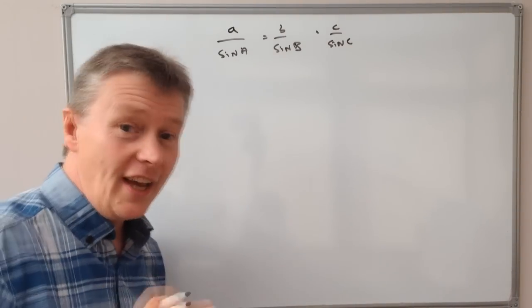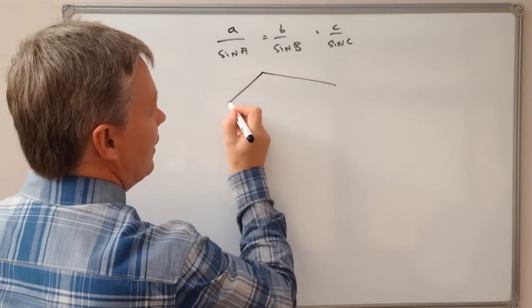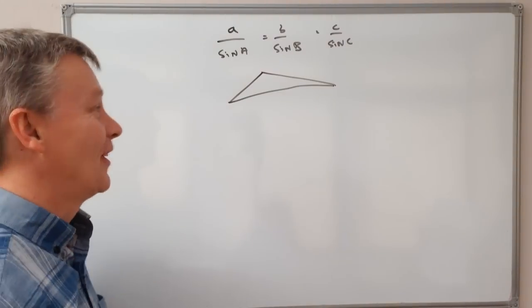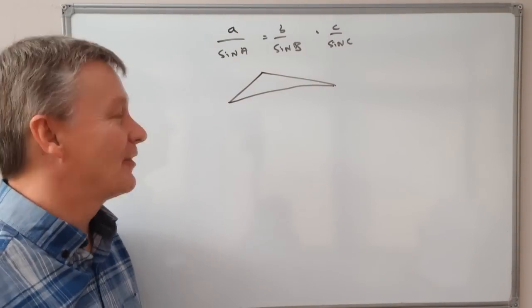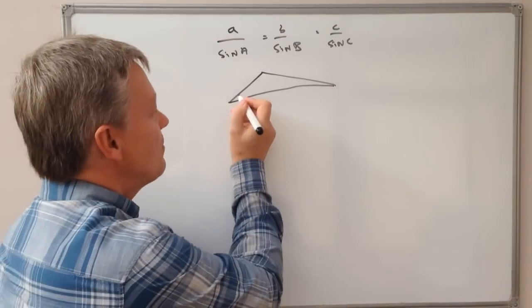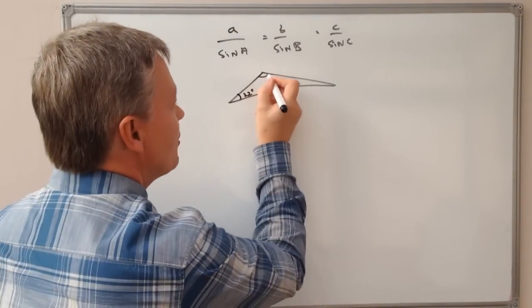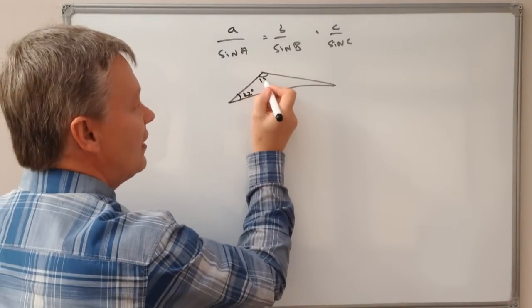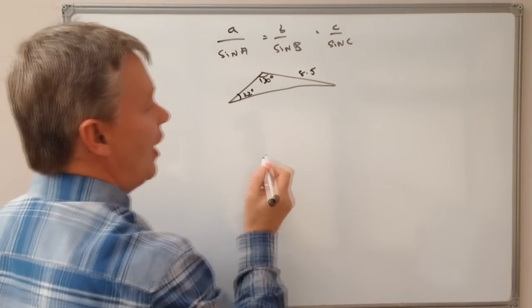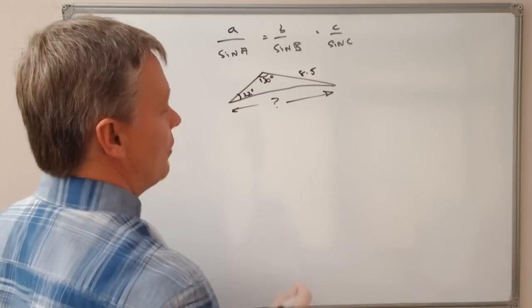A fairly typical question will involve basically a triangle, usually fairly odd shaped triangles to make sure that the numbers work out okay for you. You get given a little bit of information. In this particular case we're told that this is 22 degrees, this top here is 130 degrees, and this bit over here is 8.5. What they ask you to do is to calculate this bottom length.